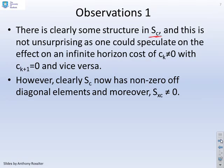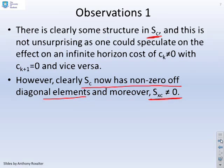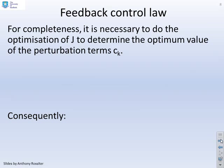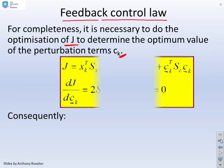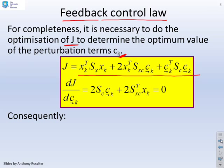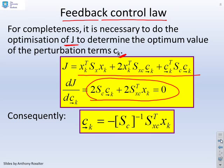So clearly, although there is some structure in Sc, what you will find is that clearly Sc now has non-zero off-diagonal elements, and Sxc is not equal to zero. So that's the key observation. It's not the same as with OMPC. So for completeness, we might want to say, in this case, what will the feedback control law be? So we need to go back and minimise J to determine the optimum value of the perturbation terms Ck. So there's our performance index. We want to minimise that with respect to Ck, and consequently, you'll get the optimum value of these perturbation terms C minus Sc inverse times Sxc transpose times Xk.